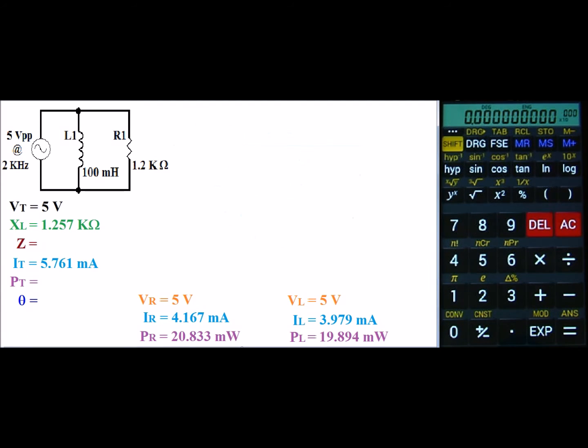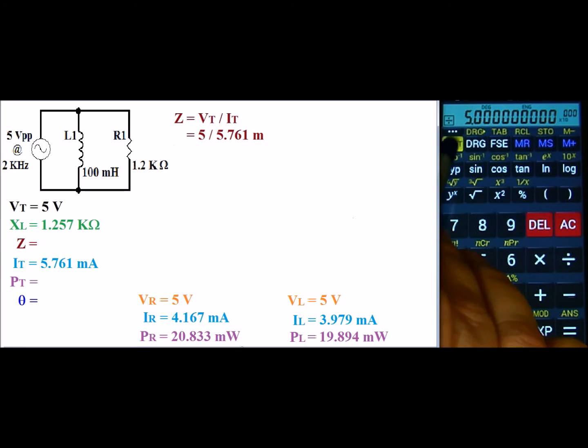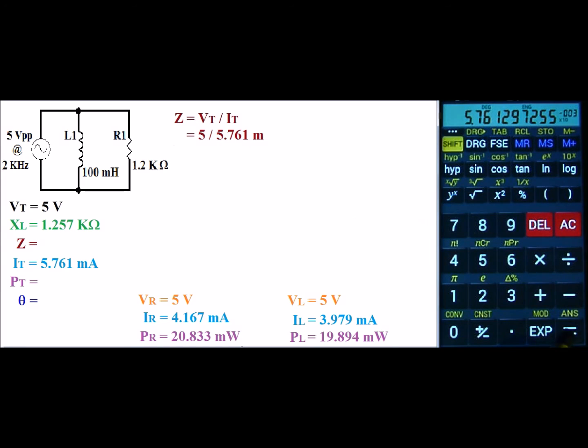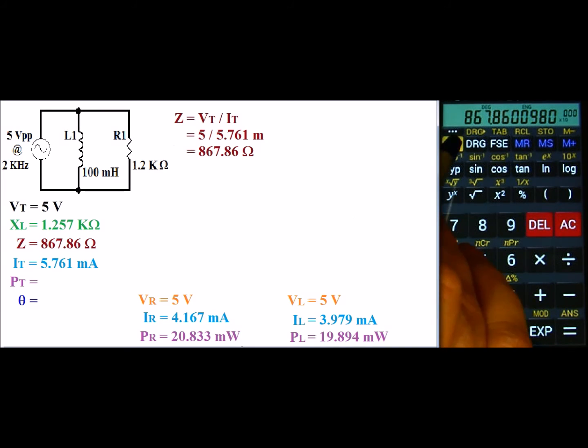Now that we have I total, we can go ahead and find Z total. Utilizing Ohm's law, we can find that Z total is equal to V total divided by I total. That's 5 volts divided by 5.761 milli. So I'm going to do 5 divided by, second function, recall my current. And that gives us an impedance of 867.86 ohms. I'll go ahead and store that value.